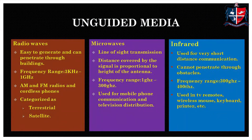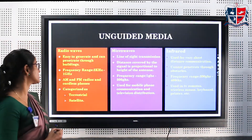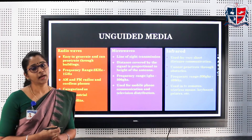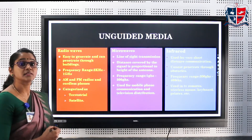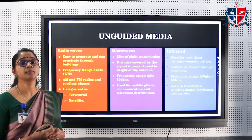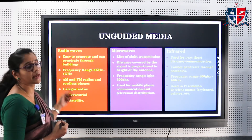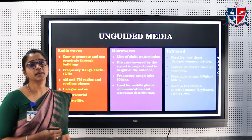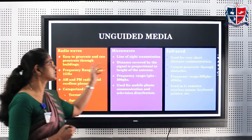Moving on to unguided media. Here we are discussing about three examples. The first one is radio wave. Radio waves are easy to generate and can penetrate through buildings. They are used in FM and AM radios, and have a frequency range of three kilohertz to one gigahertz.